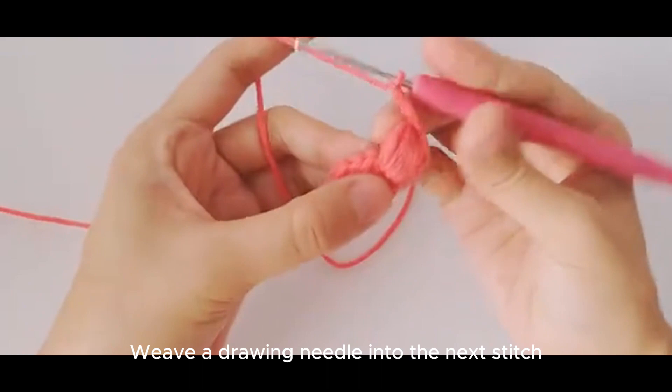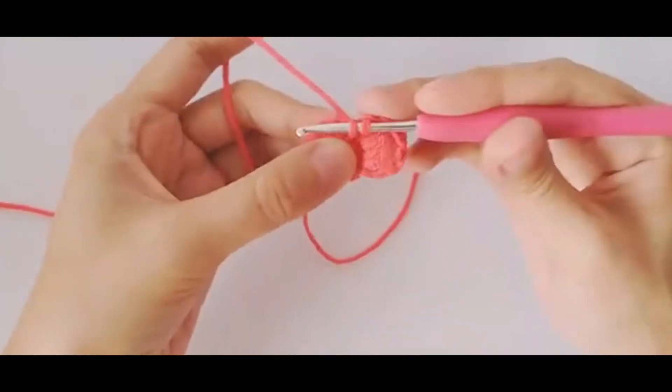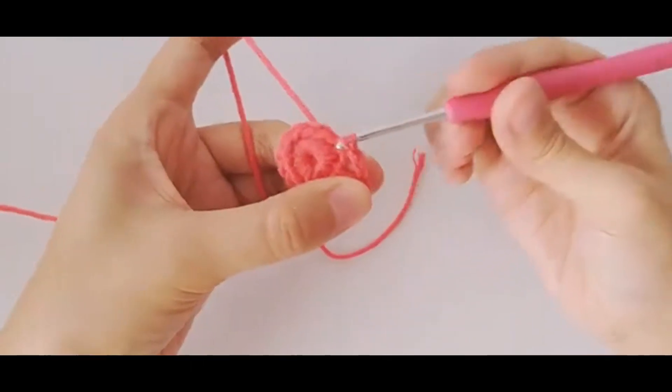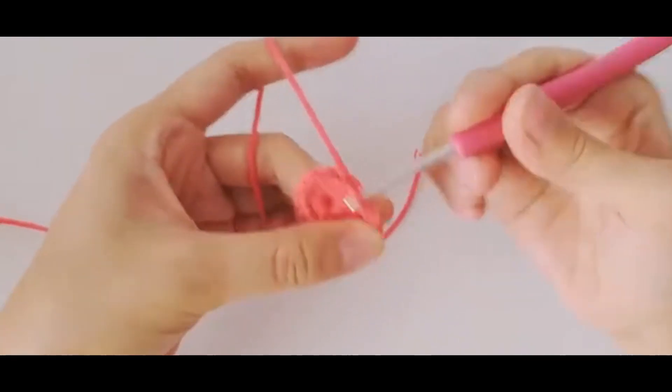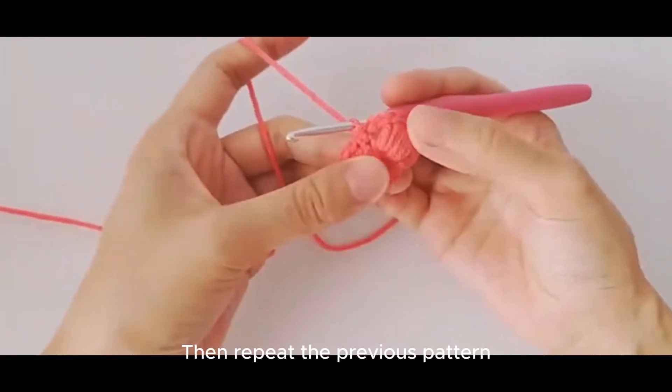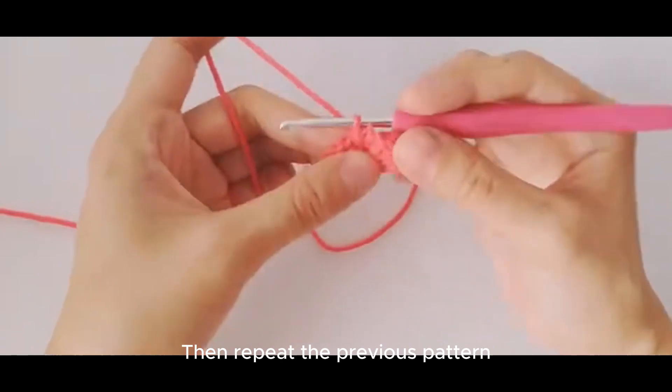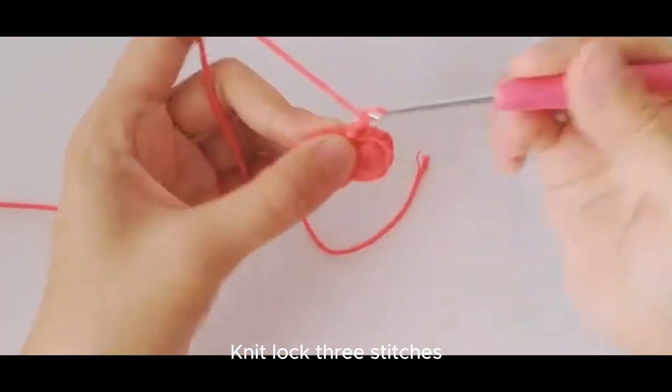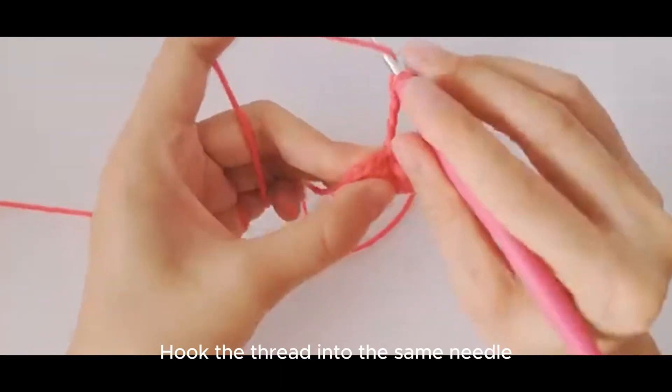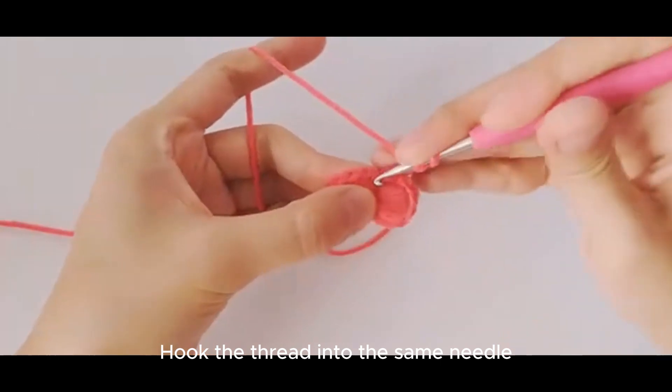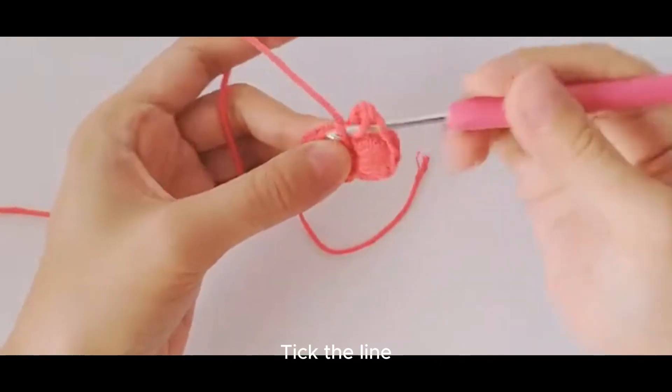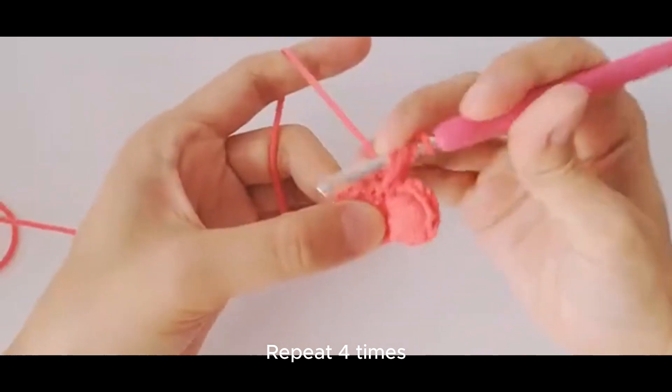With a drawing needle into the next stitch, then repeat the previous pattern. Knit lock three stitches. Hook the thread into the same needle. Tick the line. Repeat four times.